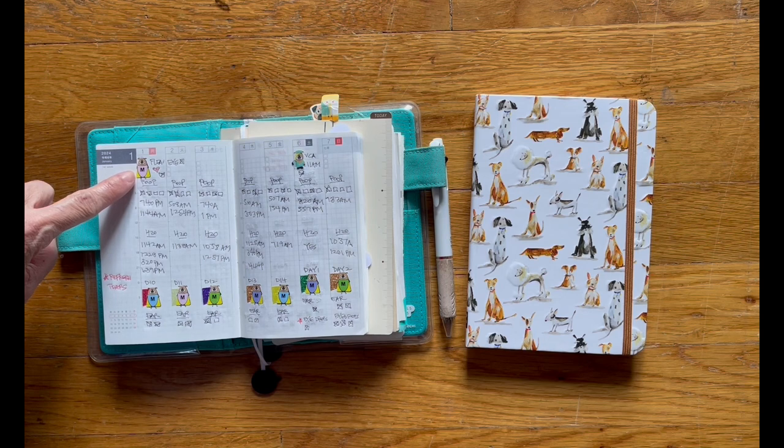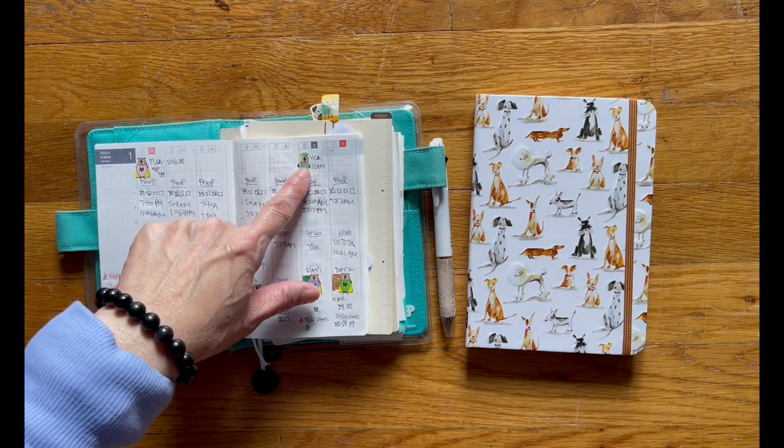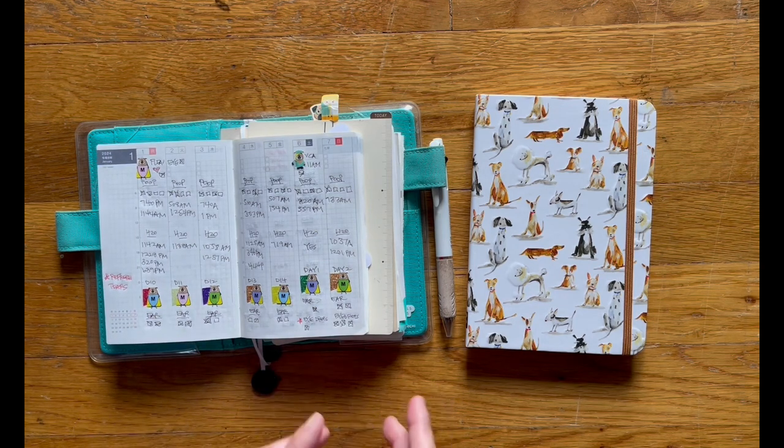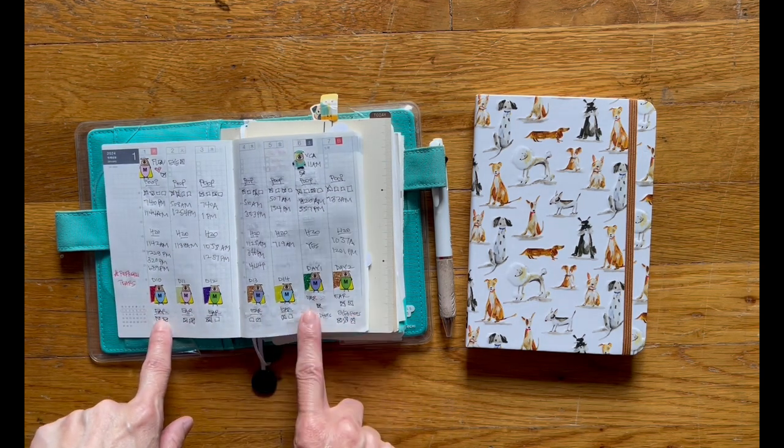Up here is where I would keep track of his medication. This is his doctor's appointment. Here's his poop, his water. And then down here if they gave him any medication I would keep track of it here, which is what I was doing.